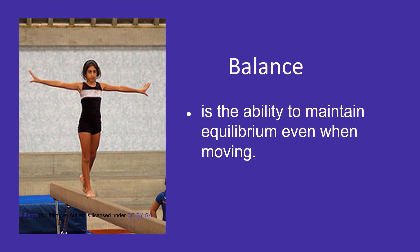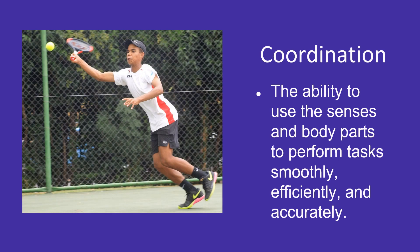Balance is the ability to maintain equilibrium even when moving. As you can see in the picture, it is a gymnast on a balance beam. Coordination is the ability to use the senses and body parts to perform tasks smoothly, efficiently, and accurately. Coordination is used in almost all sports — as you can see in the picture, a man playing tennis is using his different senses and body parts to hit the ball.